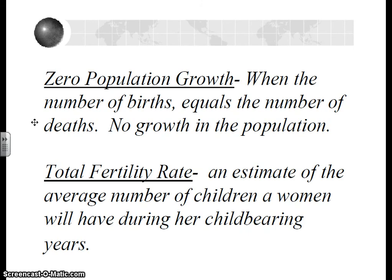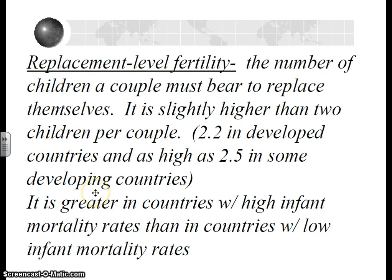Zero population growth is where the amount of people being added to the population from births and immigration equals the amount of people leaving through deaths and emigration. Total fertility rate is the average number of children a woman will have during her childbearing years — this is an estimate of how many children will be born to a mother, not to a whole population. You would think that replacement level fertility would be two children for every two parents, but different places have different rates of infant mortality, so in some situations you might have to have more than two children to replace the two parents, because some children don't make it to adulthood.